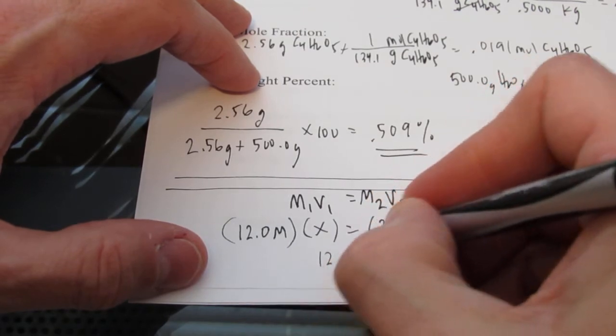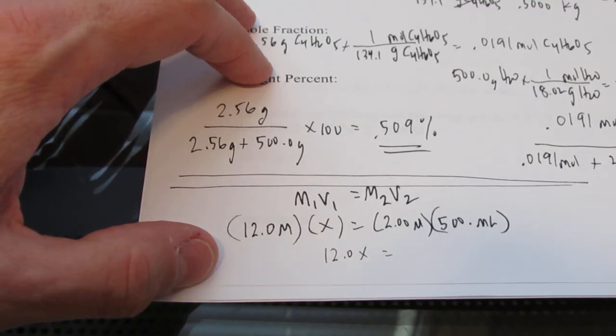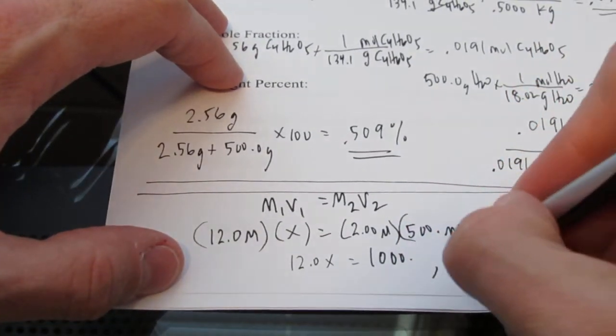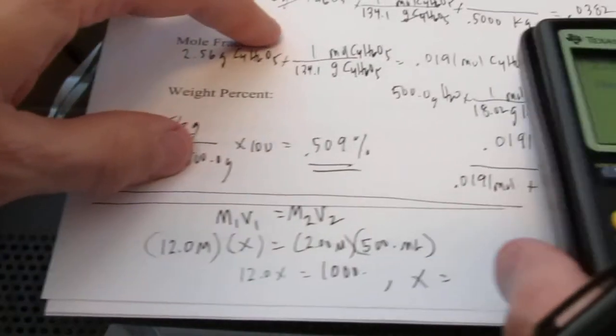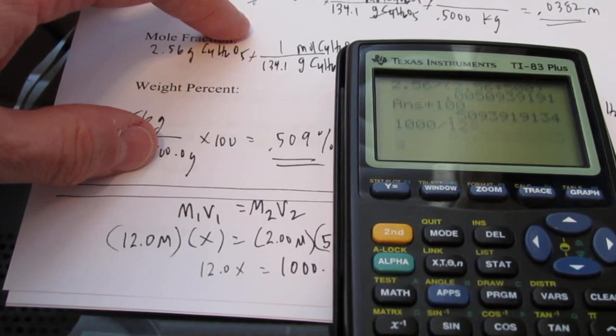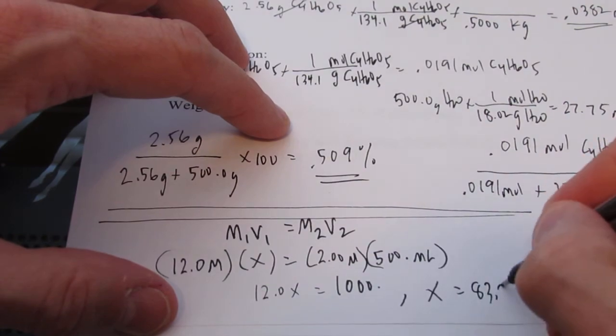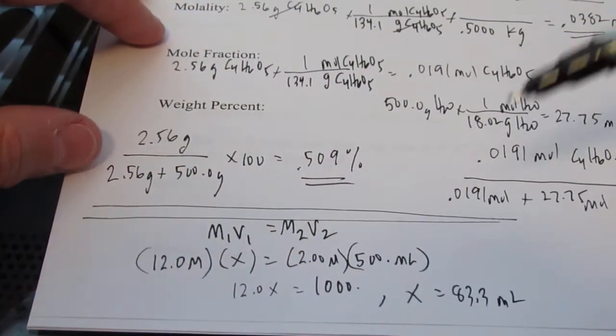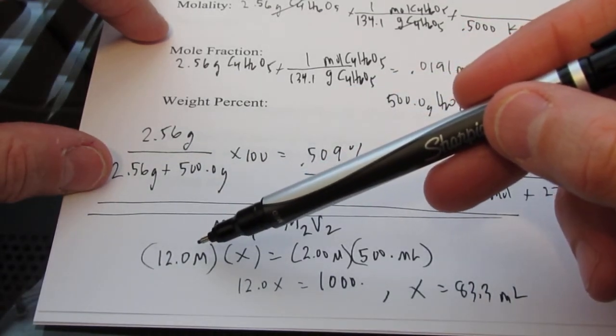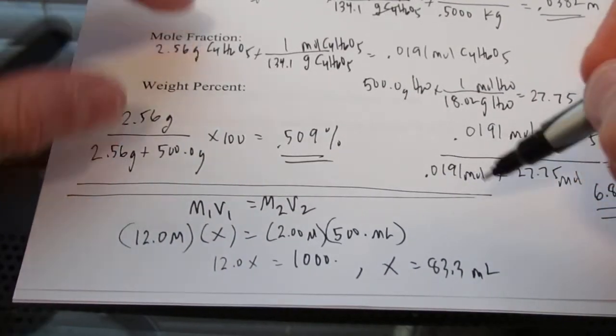So let's do the math here. 12 times x, of course, is 12x. And 2 times 500 is going to give me 1,000. And so, let's solve for x here. We end up with 1,000 divided by 12.0. And it looks like we have 83.3. 83.3 milliliters. So to make my solution, that's 2 molar, I would get 83.3 mils of my concentrated acid.